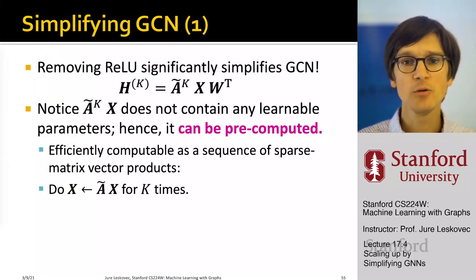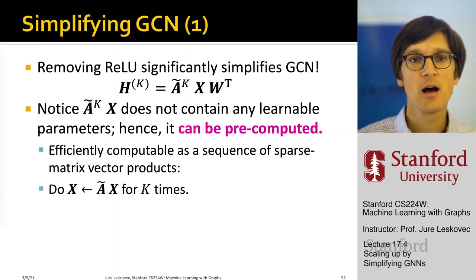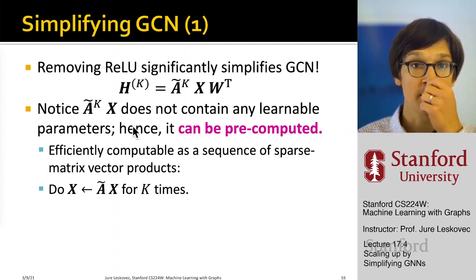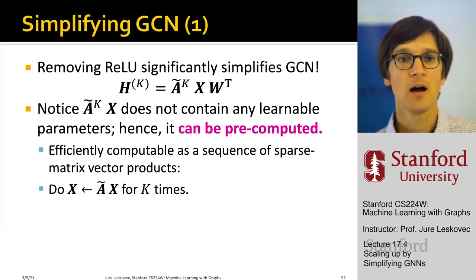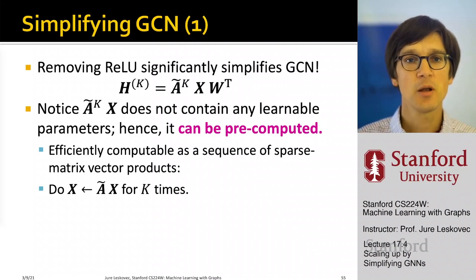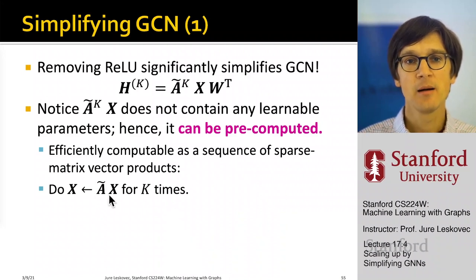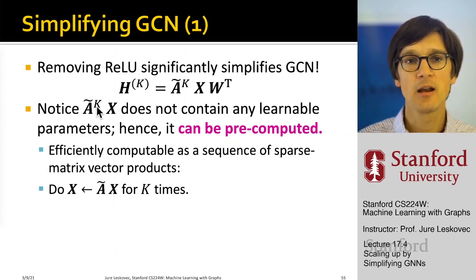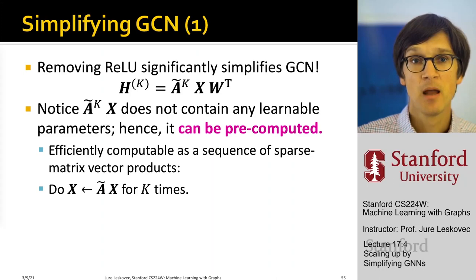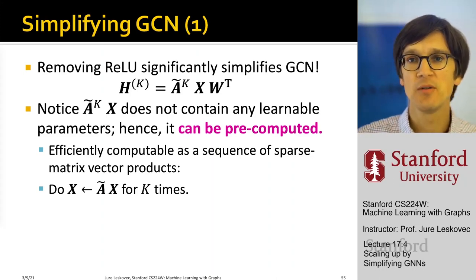We can conclude that removing the non-linearity significantly simplifies the GCN. Notice also that A-tilde to the K times X does not contain any learnable parameters. So we can actually pre-compute this on the CPU even before we start training. This can be very efficiently computed — all I have to do is multiply A-tilde with X multiple times to get A-tilde raised to the power K times X. Computing this part is very easy; it does not depend on any model parameters, so I can pre-compute it before learning.